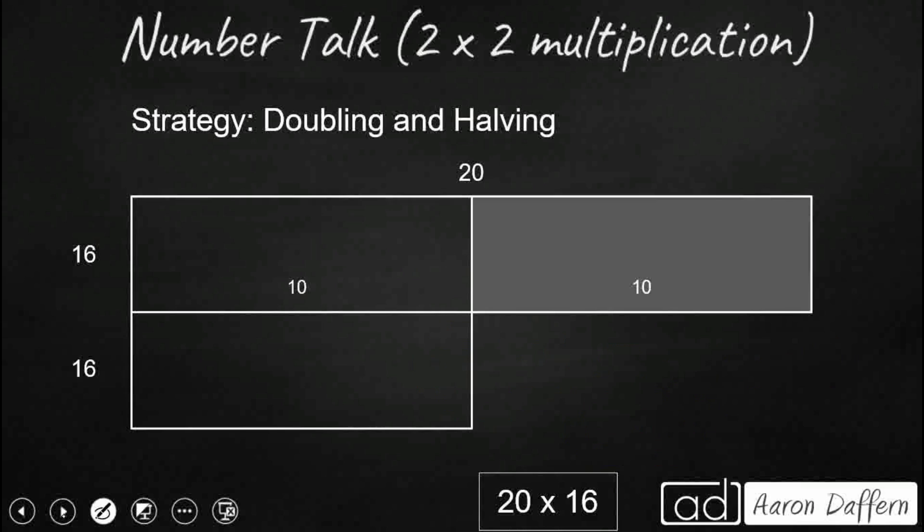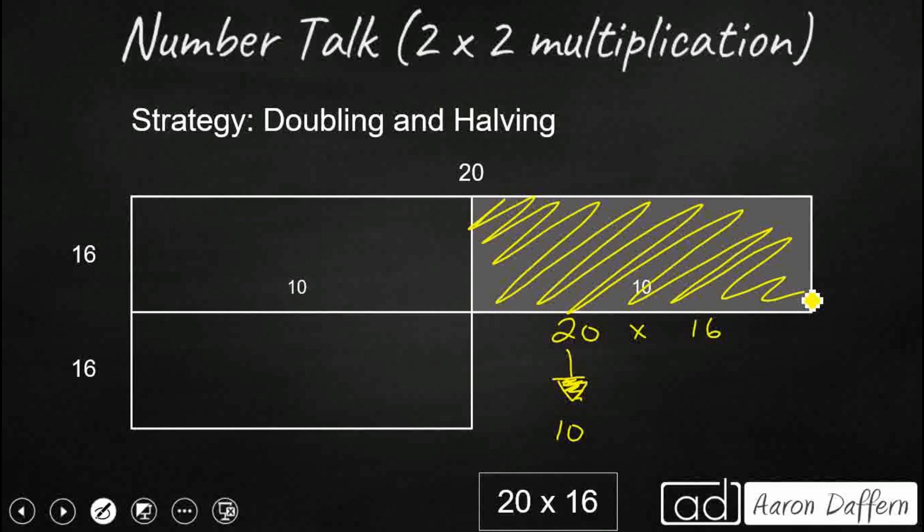Doubling and halving works if you have at least one of your factors that is even. So we're going to take our 20. We're going to cut it in half. So that's going to go down to 10. And that's why we've got this gray box here. So if you take one of your factors and cut it in half, in order to maintain a balanced expression, you've got to take your other factor, and you guessed it, we're going to double it up to 32. So you double one, you have the other. That's why I've got two 16s here.